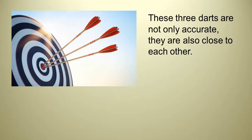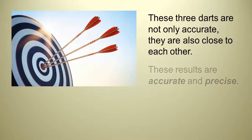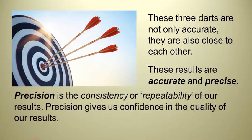So they're not just accurate, they're also close to each other. That tells us that this person is able to repeat that excellent result over and over. And so we say that this archer is not just accurate, but also precise. Whereas accurate means you got the right answer, precise means that you're consistent. So precision is the consistency or the repeatability of our results.